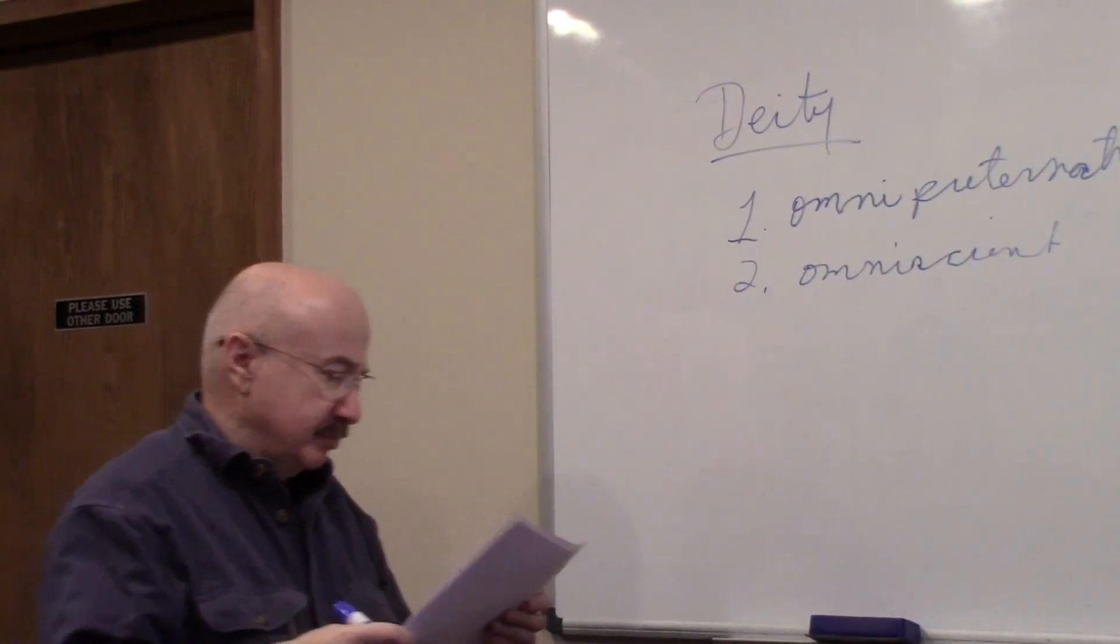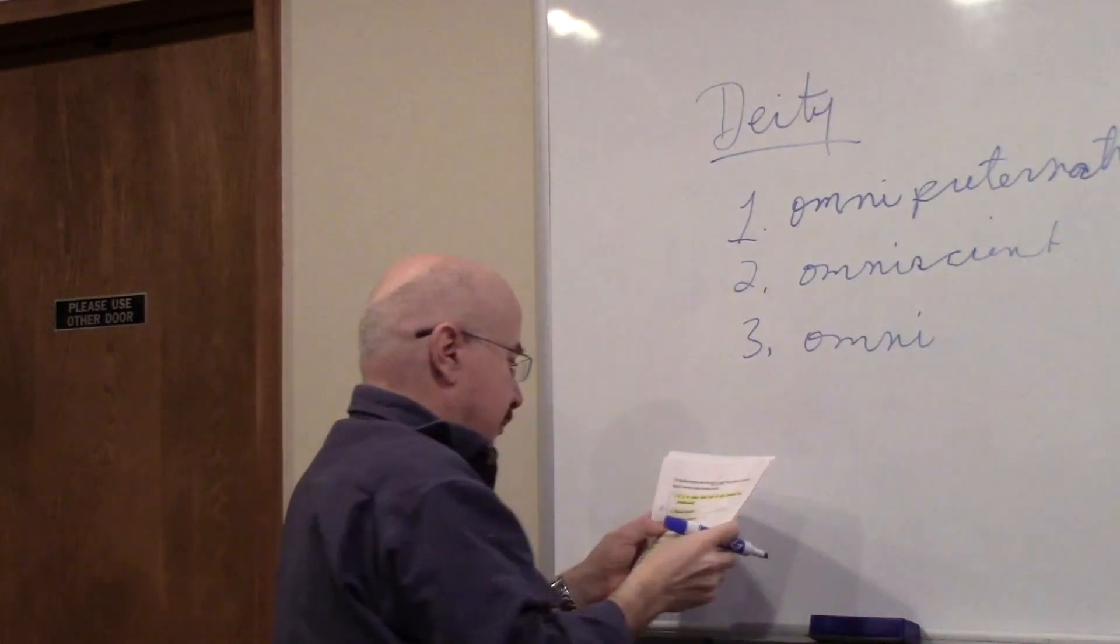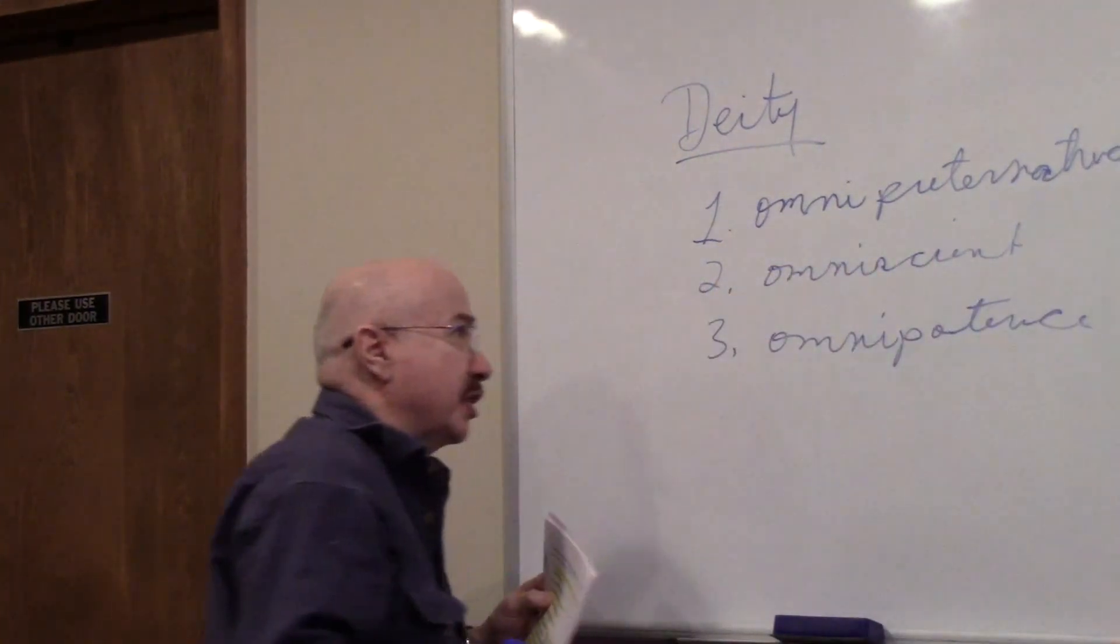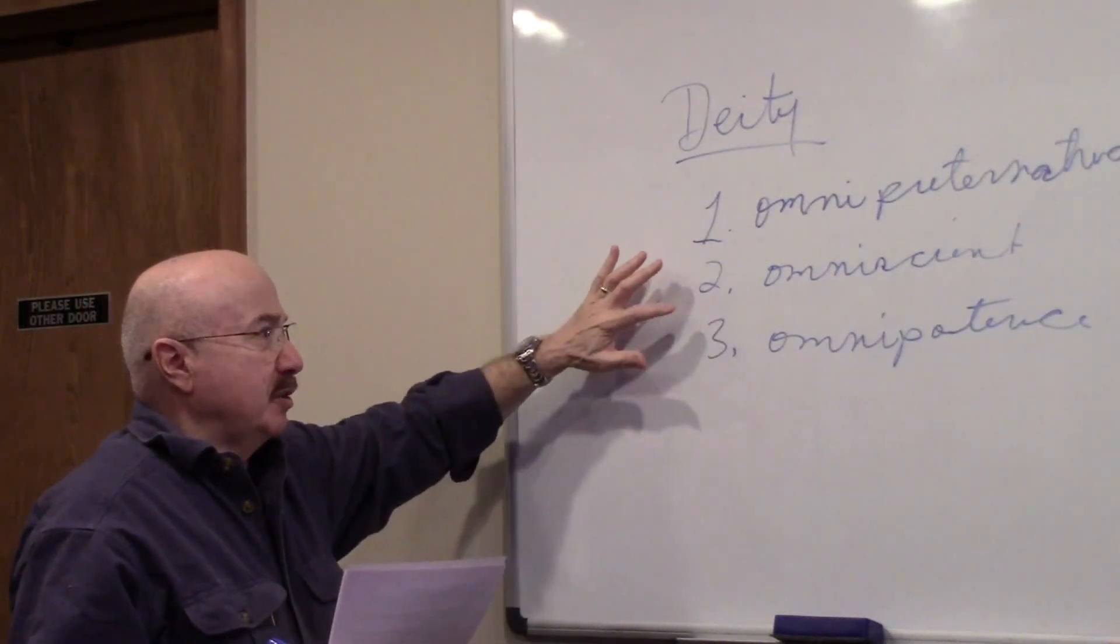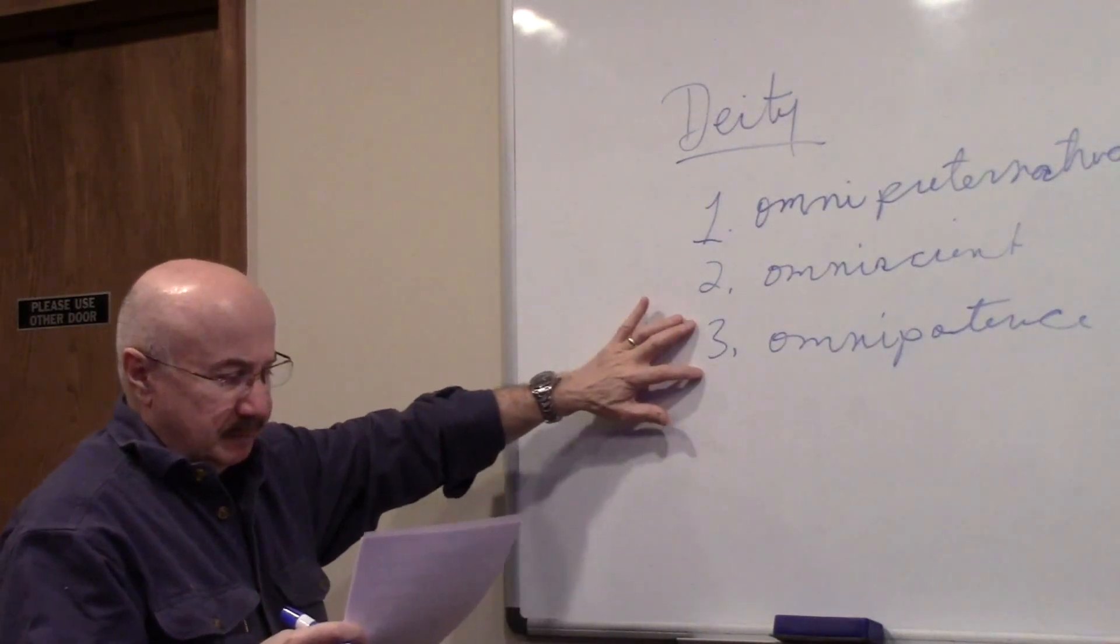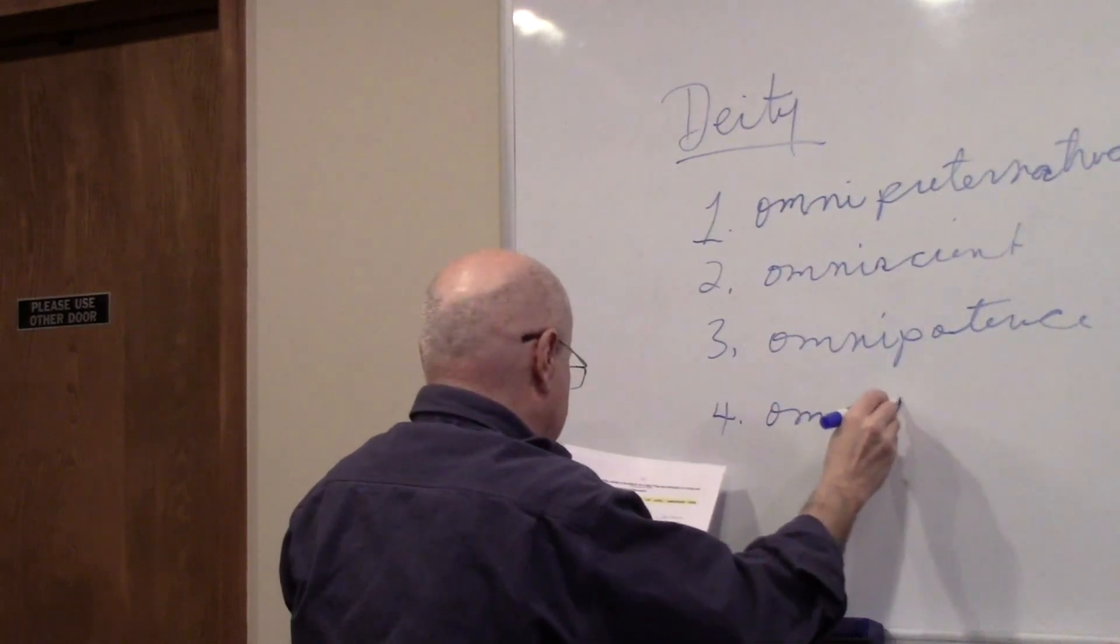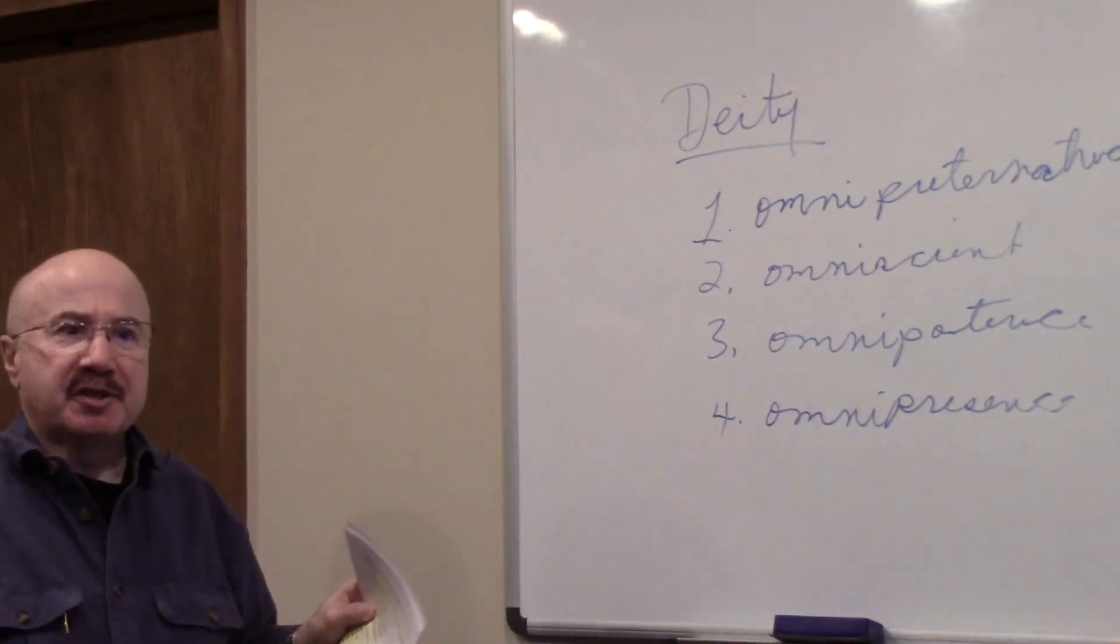The third Omni word is omnipotence, and that means all-powerful. So this means supernatural, this means knowing all, this means all-powerful. The fourth Omni word is omnipresent or omnipresence, means everywhere. The deity is everywhere, able to be anywhere and everywhere simultaneously.